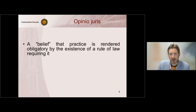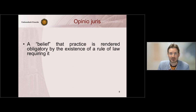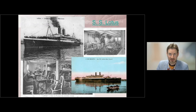Besides state practice, we also need to look at the second element: opinio juris, which we can define as a belief that the practice is rendered obligatory by the existence of a rule of law requiring it. The difficulty of establishing opinio juris can be explained with the help of the Lotus case.